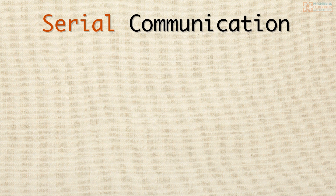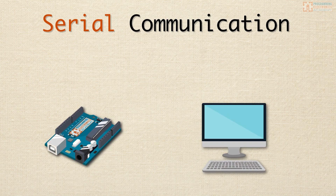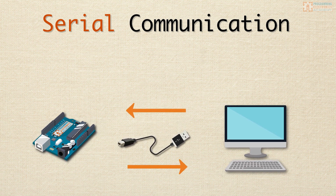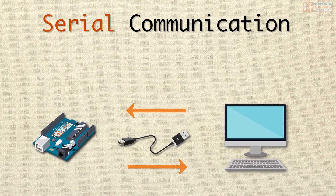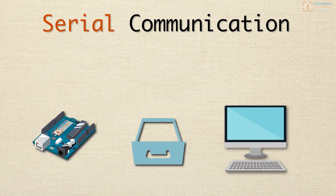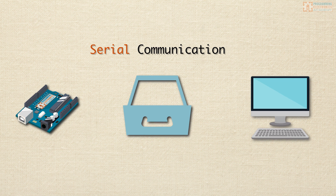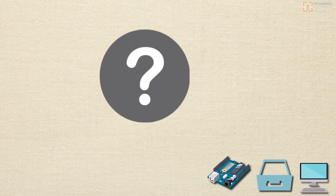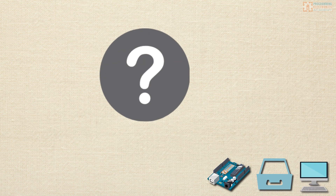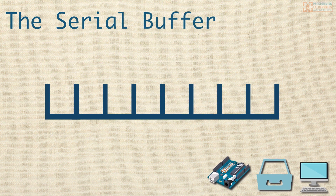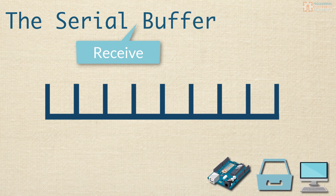Quick recap: we know that serial communication over USB is how we can talk between our Arduino and another device, and we know that the Arduino serial library is the set of software tools we're going to use for the serial communication. But where does the data that we get from another device actually end up on the Arduino? The answer is the serial buffer, or more precisely, the serial receive buffer.